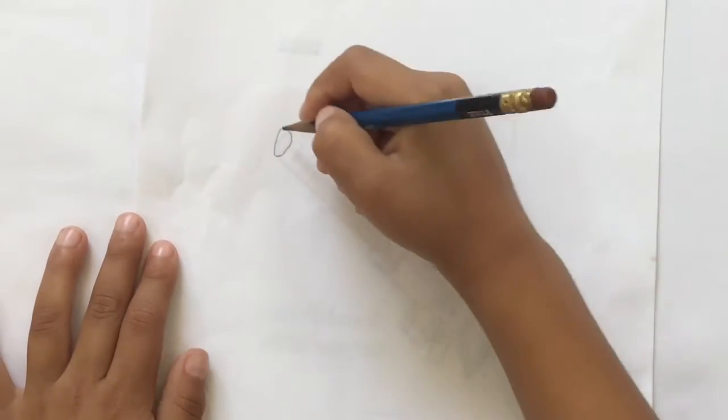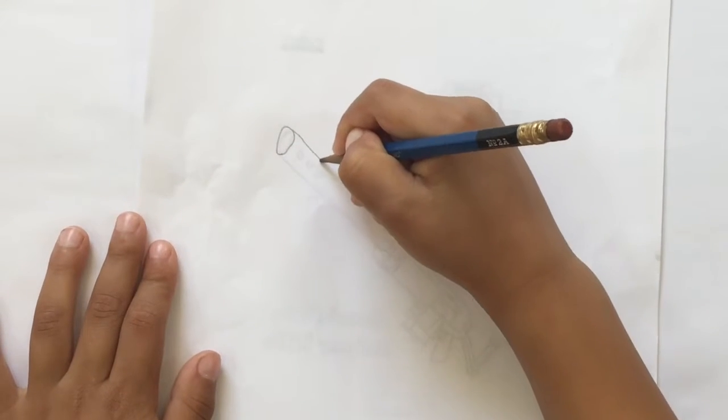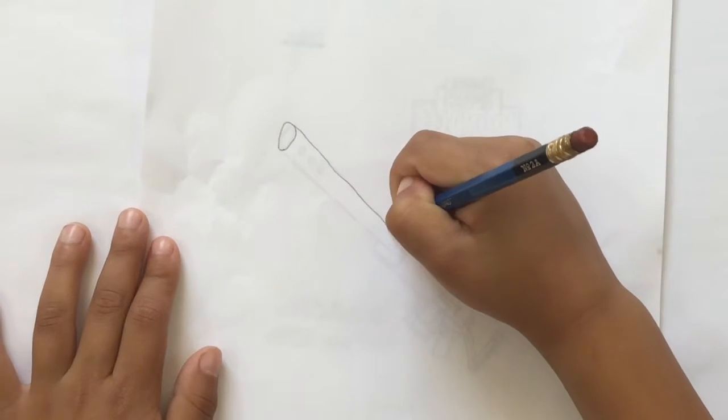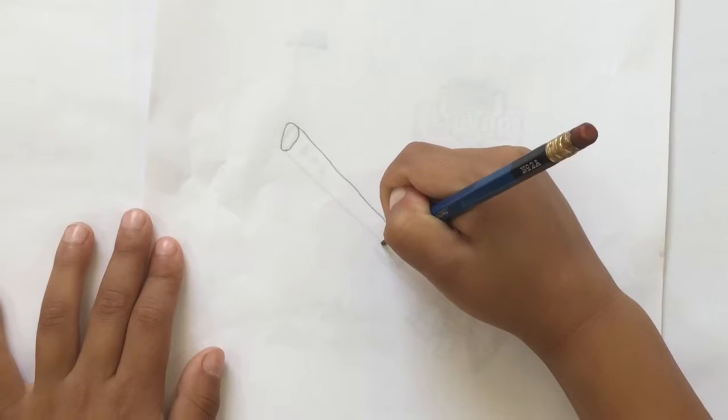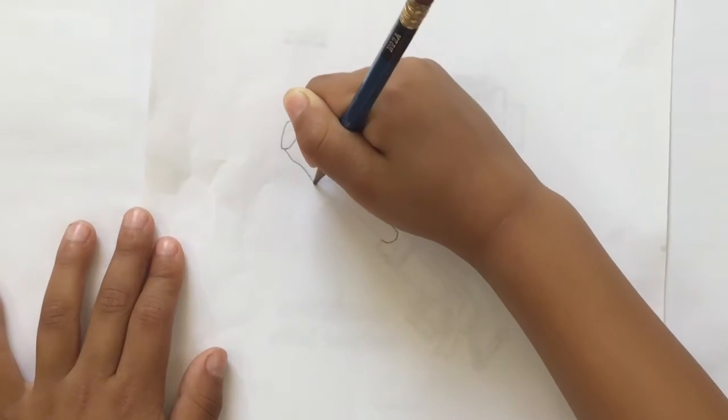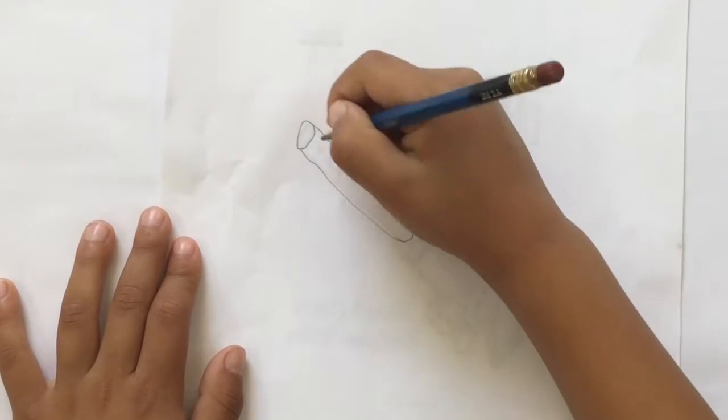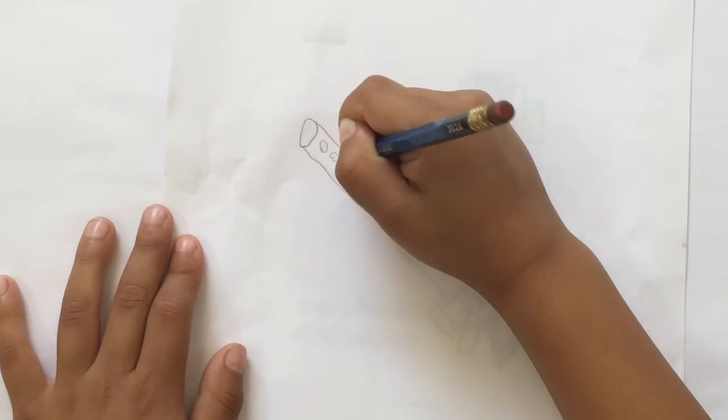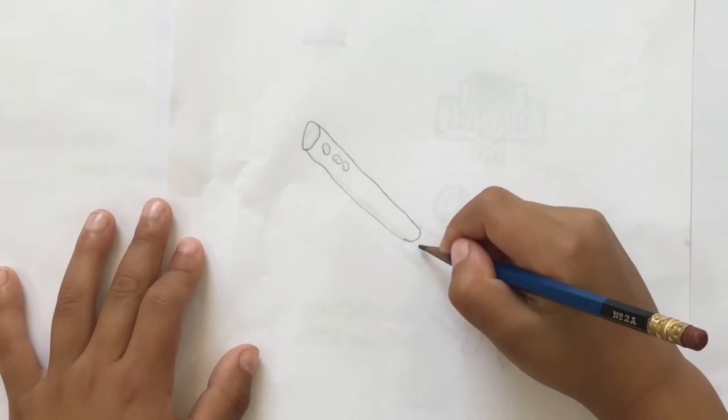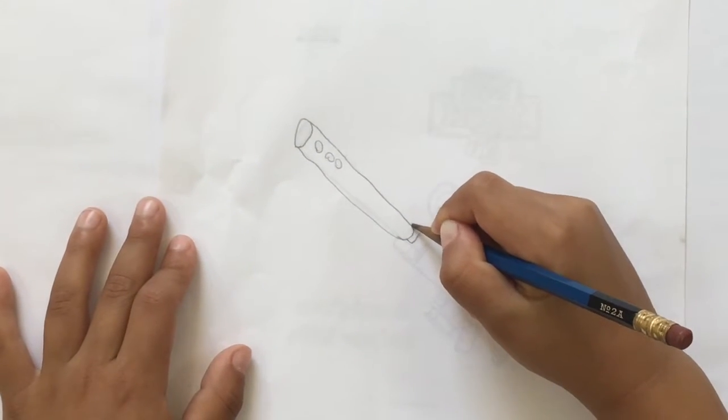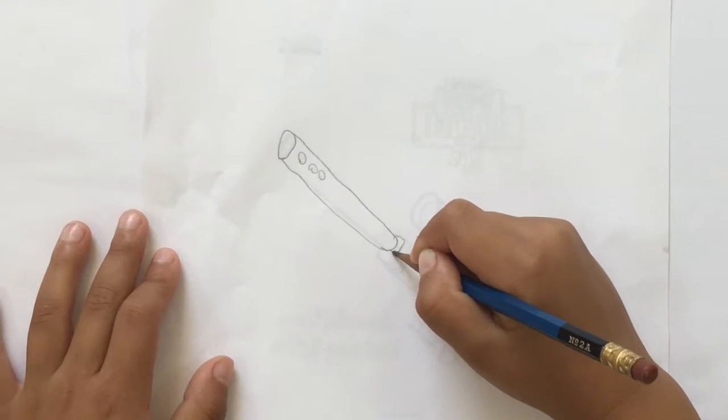First, let's draw a circle and then draw a line down here to make a U-turn. I'm going to draw another line, then three small circles inside, then a rectangle here that's cut in half.